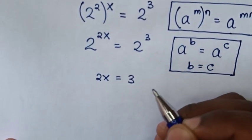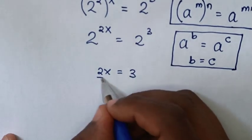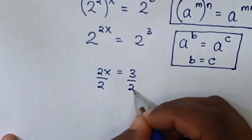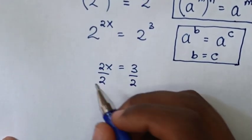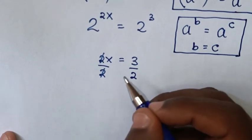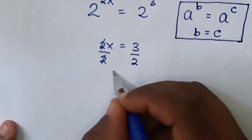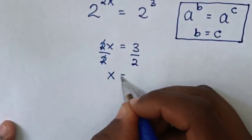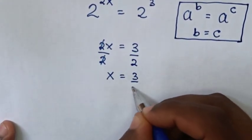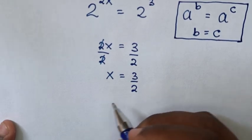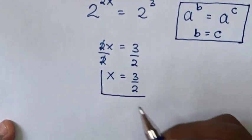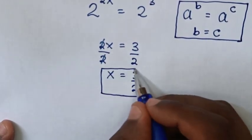Then in the next step, we divide by 2 on both sides, so the 2s will cancel. Then x is equal to 3 over 2, so this is the final answer for the value of x.